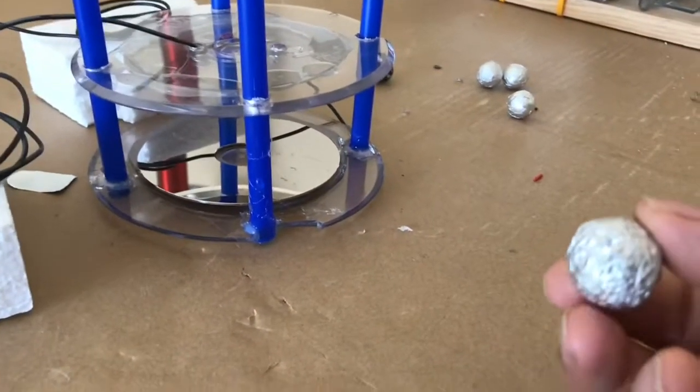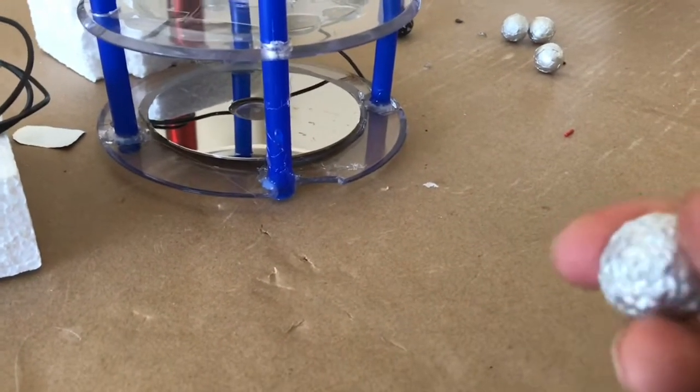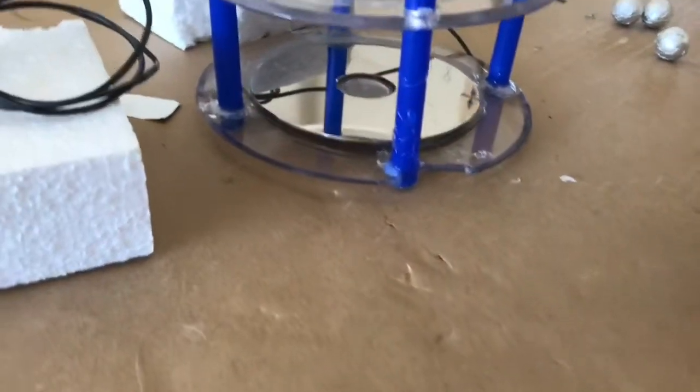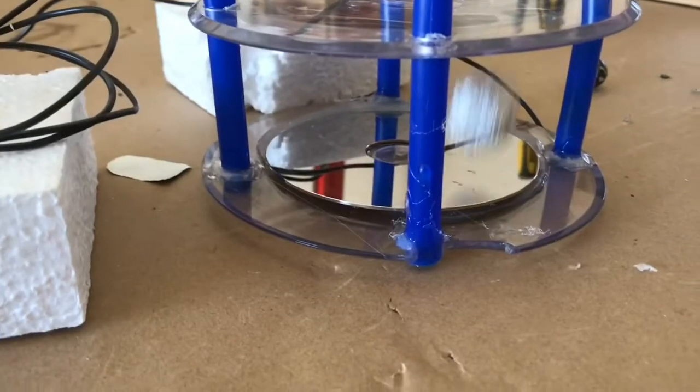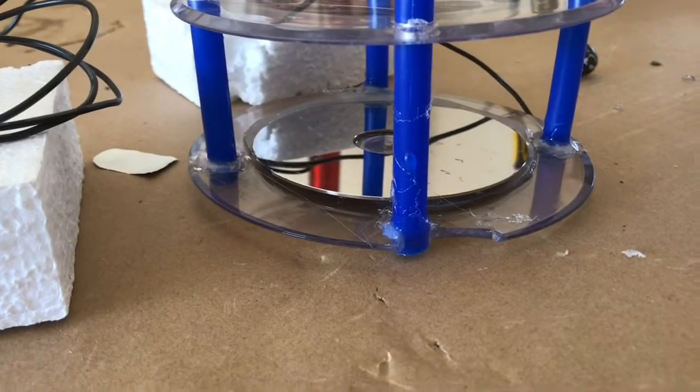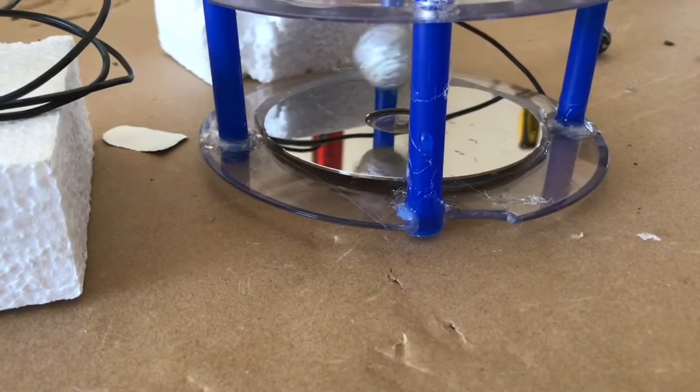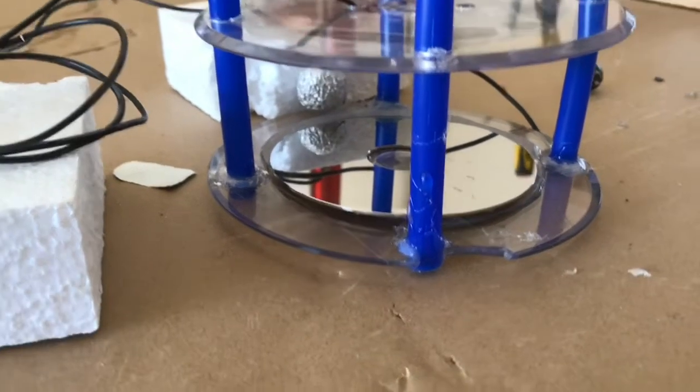Now for testing a styrofoam ball with foil on it. Let's see what happens. Oh look, it bounces. It flows itself out of it. Interesting.